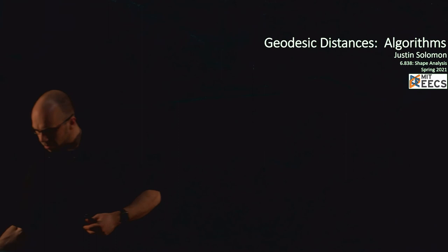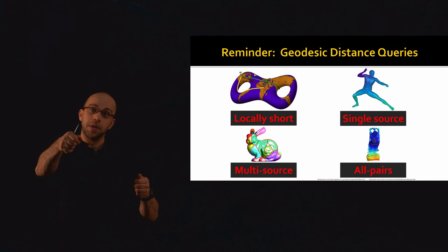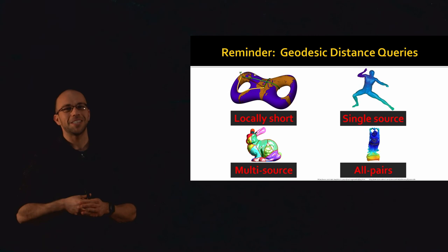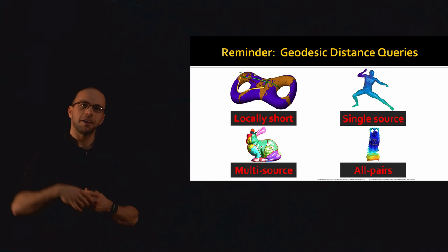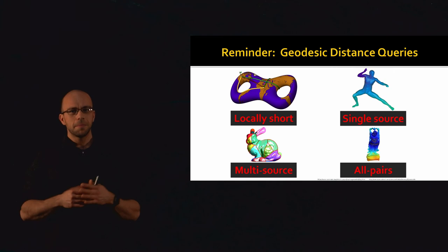As a tiny bit of review, hopefully you remember from our previous lecture what a geodesic distance is. Geodesic distance is nothing more than the shortest distance between two points on a surface, where the path between those two points is constrained to move along that locally two-dimensional domain. All of these related queries are identical in Euclidean space, but they're all slightly different the second that you're on a curved domain.